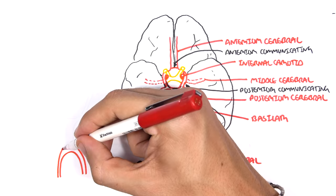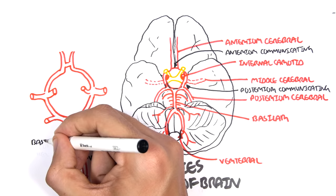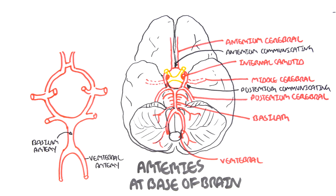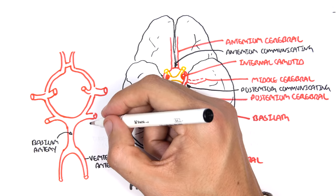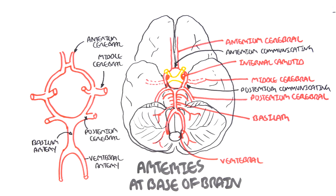Now let us look at the circle of Willis again, separately from the brain, just by itself. Here are your vertebral arteries, which form the basilar artery from the back of the brain. The basilar artery crawls up the brainstem and then bifurcates, giving off the posterior cerebral arteries. You then have the middle cerebral artery, which supplies the center of the brain, and the anterior cerebral artery, which supplies the front of the brain.